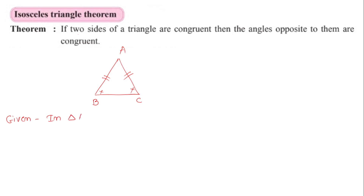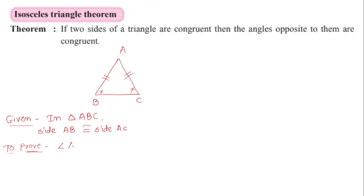In triangle ABC, there are two sides congruent. That is, side AB is congruent to side AC. That is the given. To prove: the angles are congruent — angle B, which is angle ABC, is congruent to angle C, which is angle ACB.